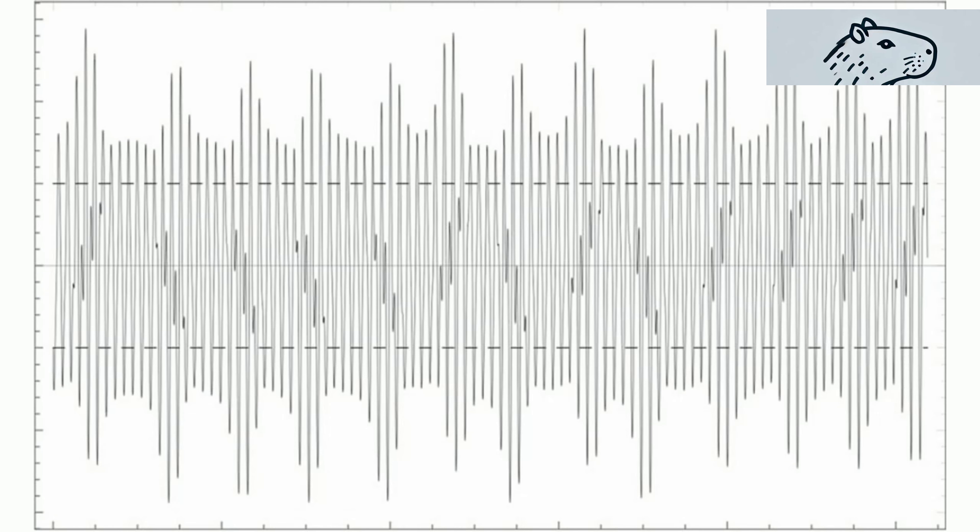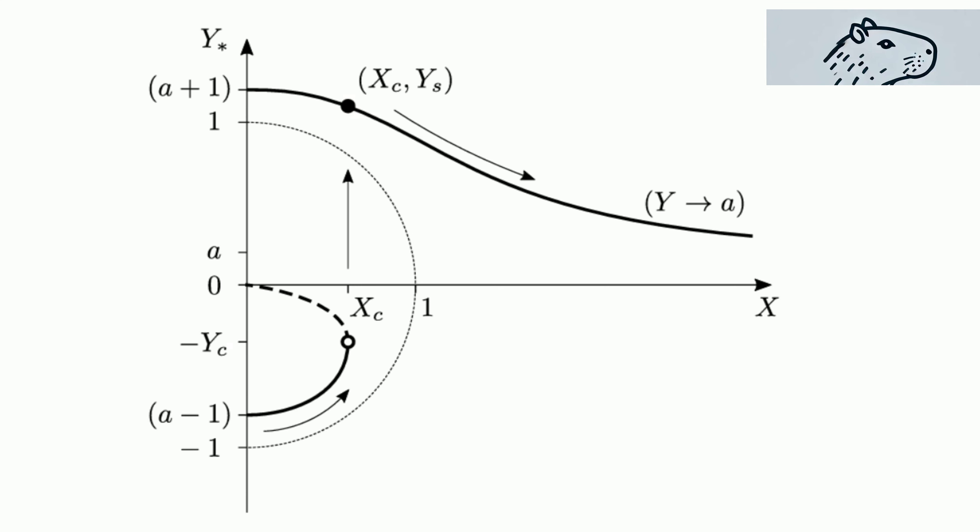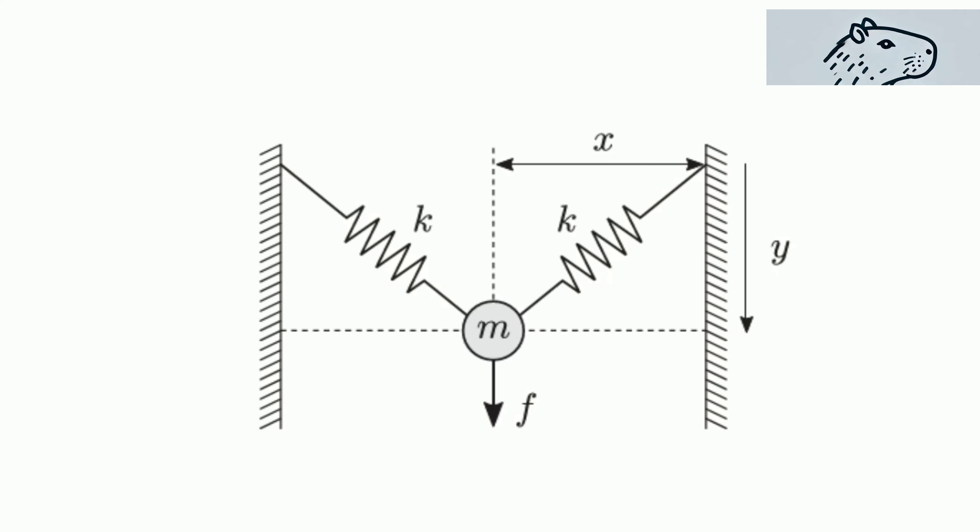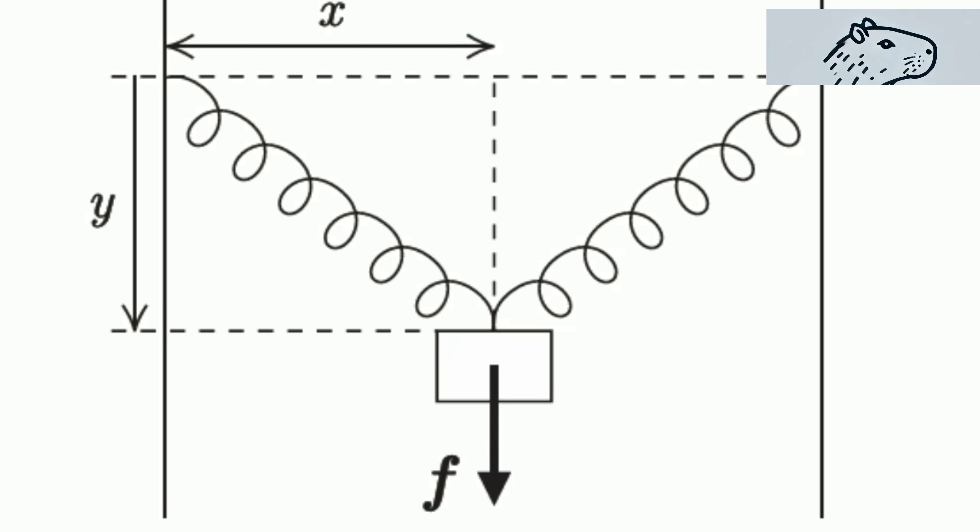Our study delves deep into this dynamic behavior, supported by theoretical analysis and detailed COMSOL simulations. This simple mass spring system showcases how continuous changes in system parameters can lead to critical transitions or tipping points.